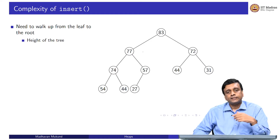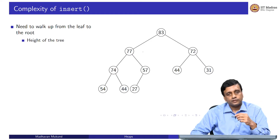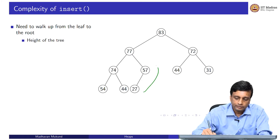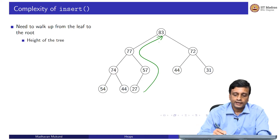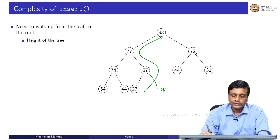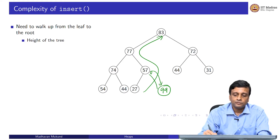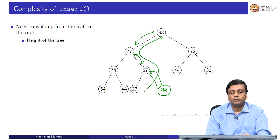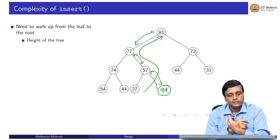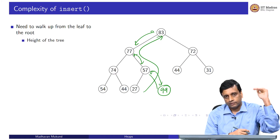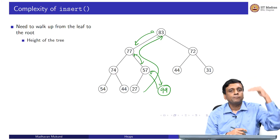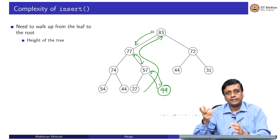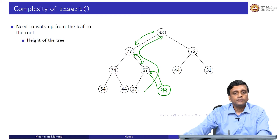How much time does insert take? In the worst case — for example, inserting 99 — we may need to swap all the way up to the root, traversing all levels. The time is proportional to the height of the tree. So what is the height?